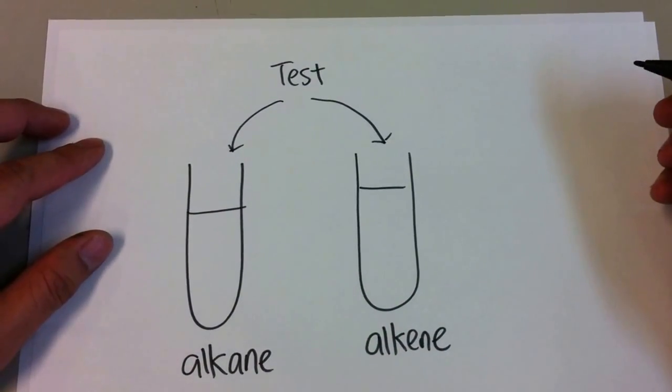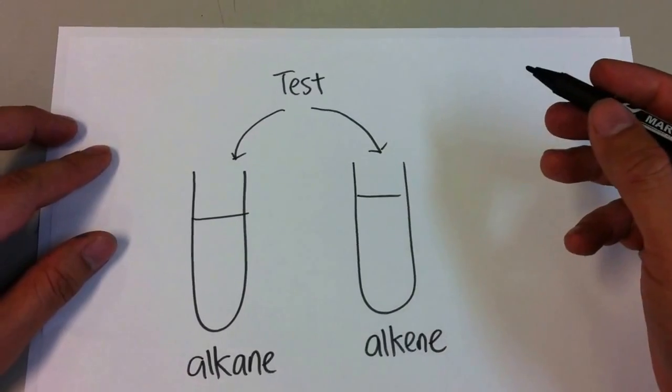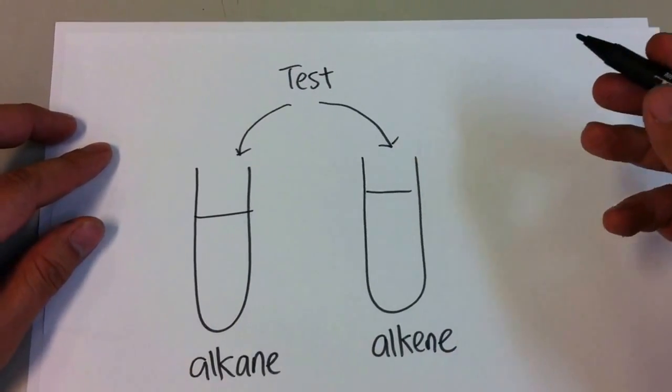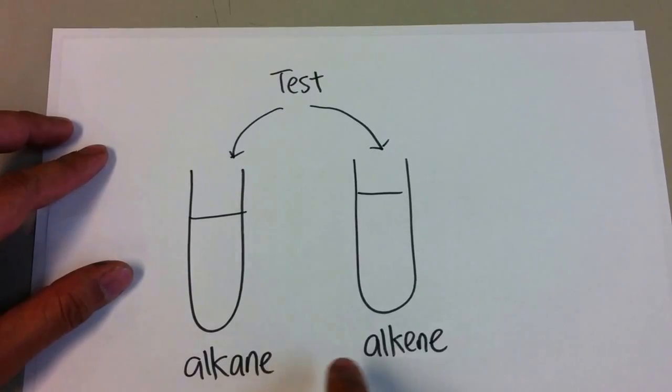A question that is very common and often comes up, teachers like to ask is: how can you perform a test in a lab that can differentiate test tubes containing an alkane and an alkene?